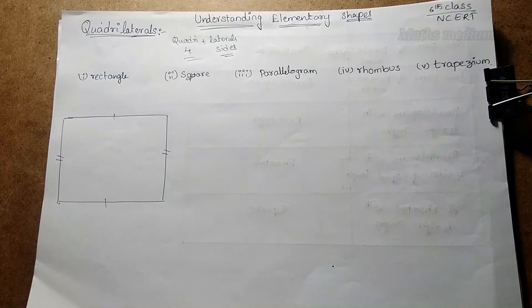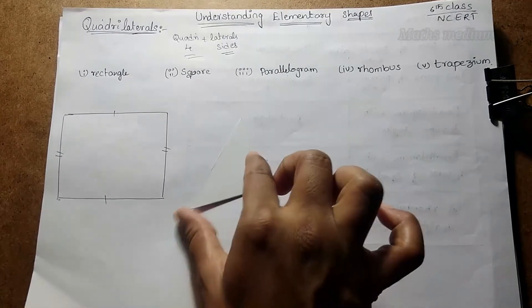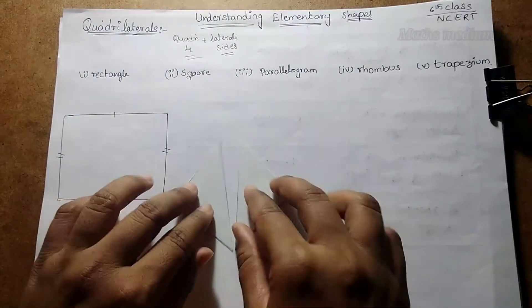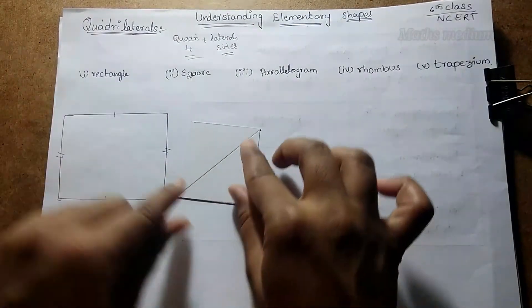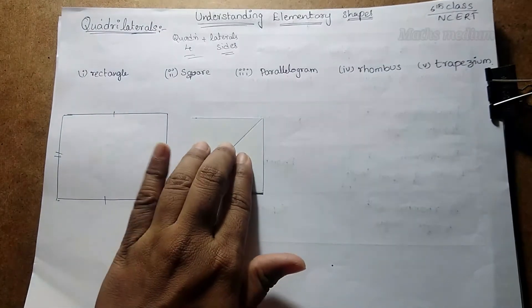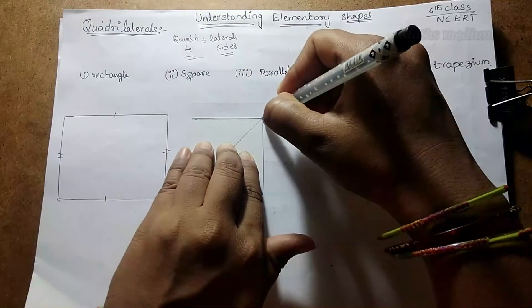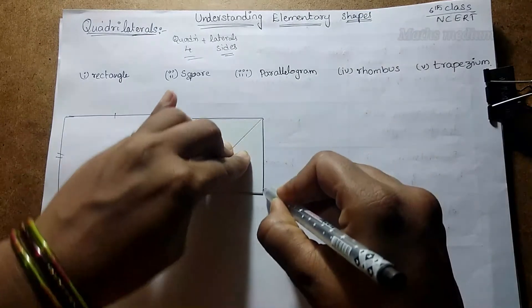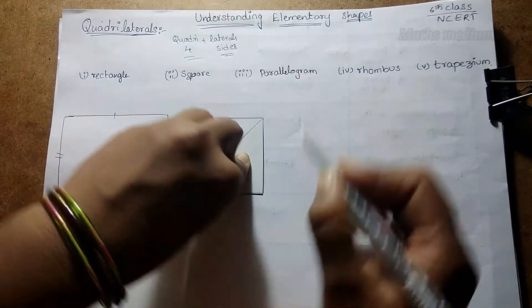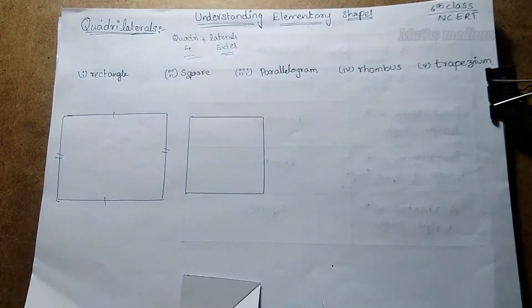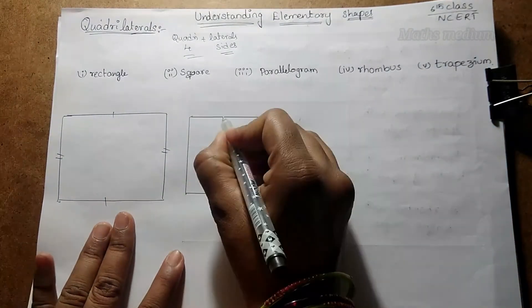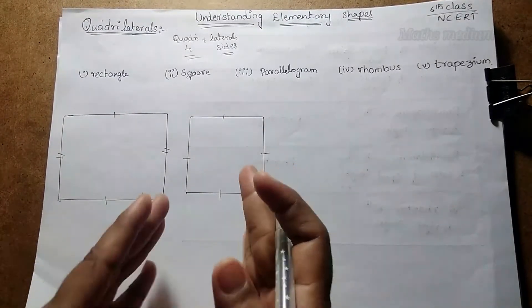If you take a square, take the 30, 30, and 90 degree set square. If you take two such set squares and set them as a square and make a border through these two set squares, we get a square easily. Square means all sides are equal.